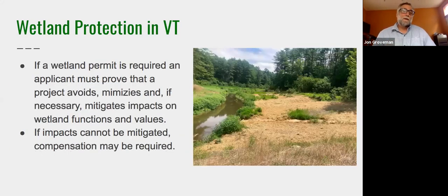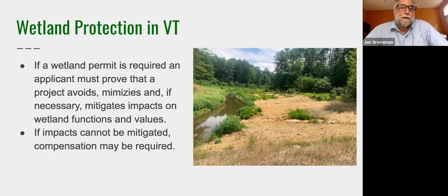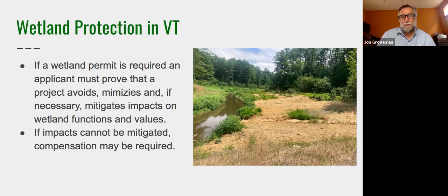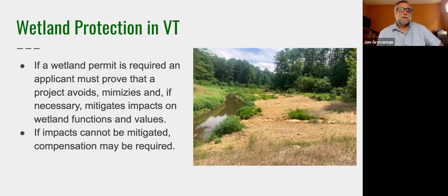If a wetland permit is required, the standard is: you must avoid, minimize, and if you still have an impact after minimizing, you must mitigate impacts on wetland functions and values. If impacts can't be mitigated, there's a compensation section of the wetland rules — meaning you may have to actually create or restore wetland to make up for the loss of functions and values. Vermont doesn't use the compensation section very much.